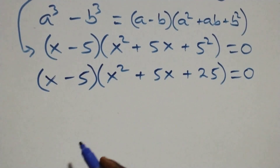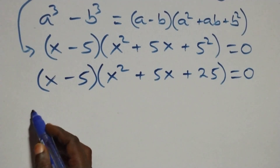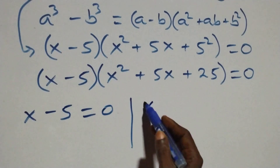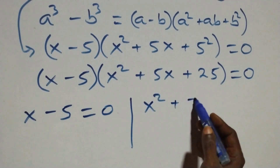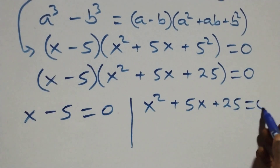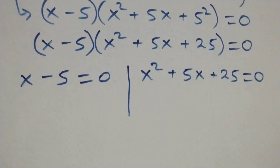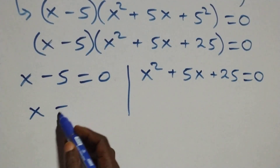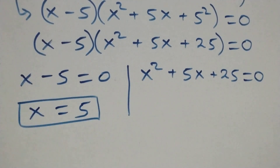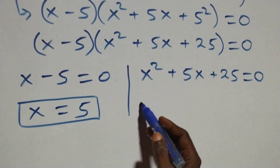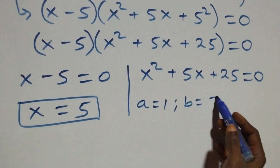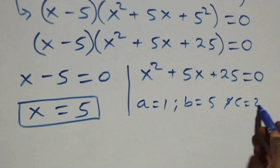Here also we have two possible cases. The first one: x minus 5 equals to 0, or we have x squared plus 5x plus 25 equals to 0. Solving the first, we have x equals to 5, which is a real solution. Then here we have a quadratic equation where a equals to 1, b equals to 5, and c equals to 25.